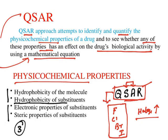Hydrophobicity can be taken for a whole molecule or for a particular substituent. For the whole molecule, it is log P. Electronic and steric parameters, however, are only possible with substituents — not for the whole molecule — hence they are considered only for substituents.